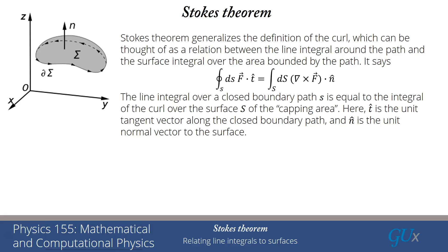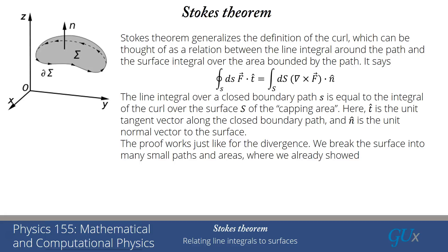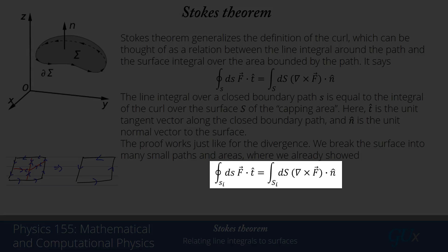The proof essentially starts from the definition we had about the curl and uses the same strategy we used for the divergence theorem. We break up the surface into many small paths and areas. For each small path, we already showed the integral of f dot t was equal to the integral over the area of del cross f dot n.